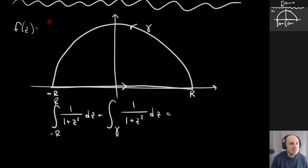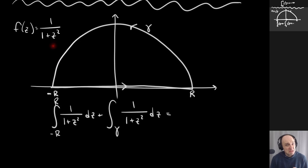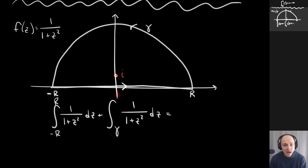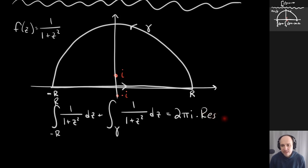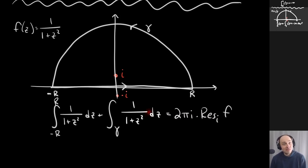The function I'm integrating is f(z) = 1/(1+z²). Its denominator vanishes when z = ±i, so this function has poles at i and at −i. The residue theorem tells me that integrating around this closed contour equals 2πi times the residues of the enclosed poles. In this case there's just the one enclosed pole at i, so it's 2πi times the residue of f at i. We're using complex analysis to attack this integral.